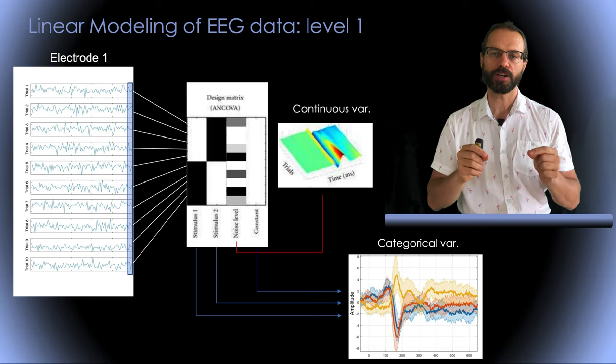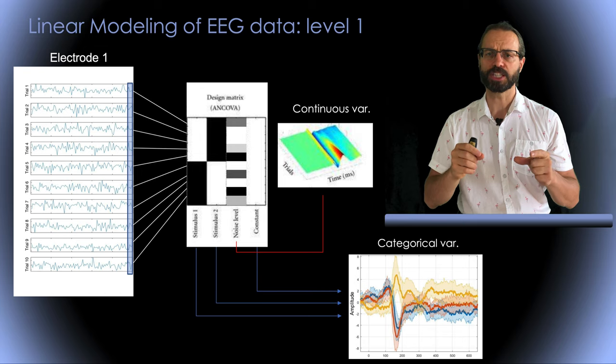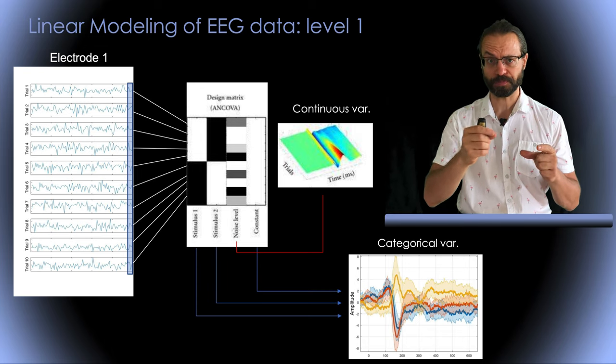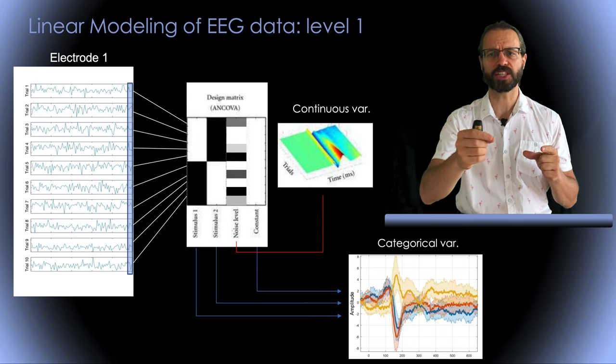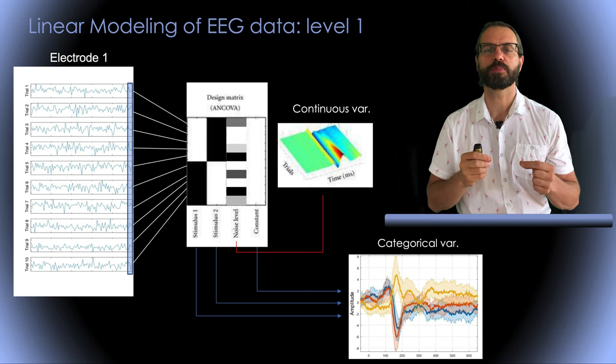For continuous variable, in this case the stimulus noise level, we have an image, the 3D image. In this case trials have been sorted by the amount of noise. So we can clearly see how the amount of noise affects single trial beta ERP.